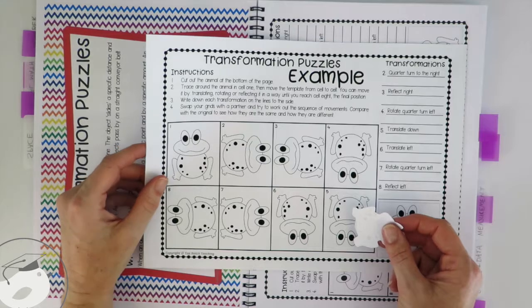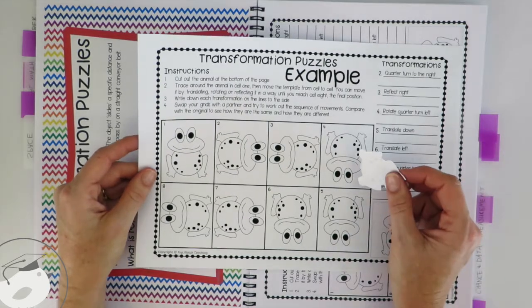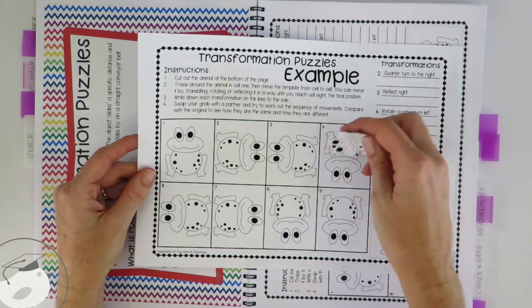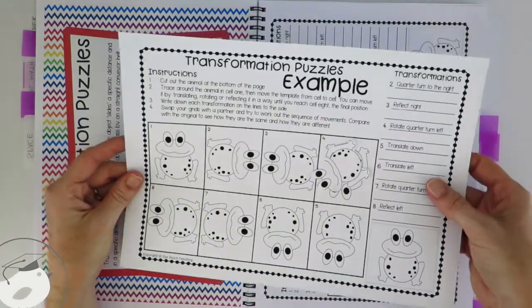So it's a really good way to help kids see how you can transform shapes and animals. It hasn't actually changed the original shape but how it can move from one cell to the next.